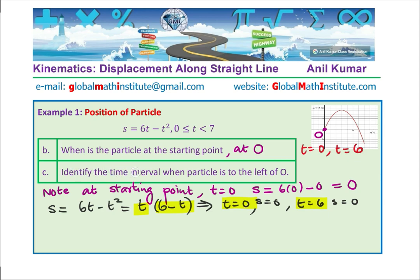Part C asks us to identify the time interval when the particle is to the left of O. Being to the left of O means displacement is less than 0, i.e., negative. From our calculations, after t equals 6 the displacement becomes negative. So the interval is greater than 6 and less than or equal to 7 — we do not include t equals 6 since displacement is 0 there.